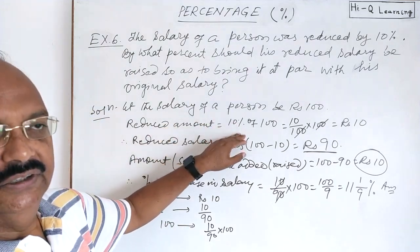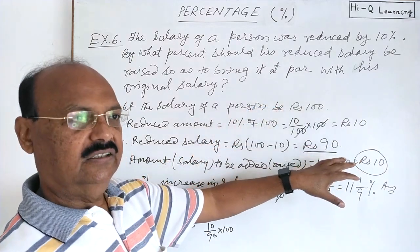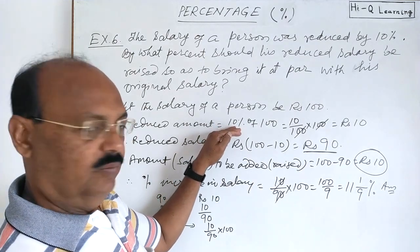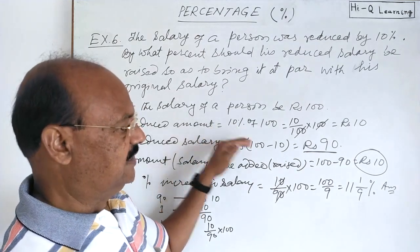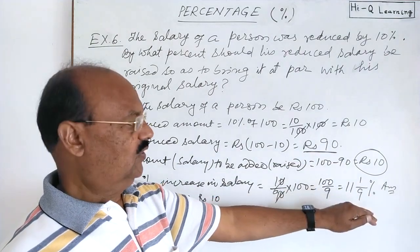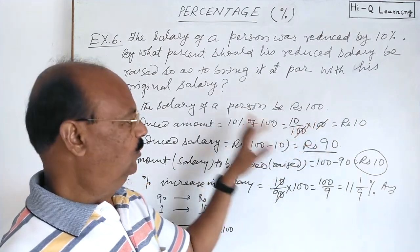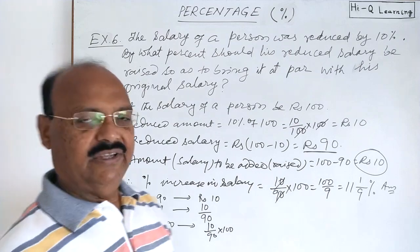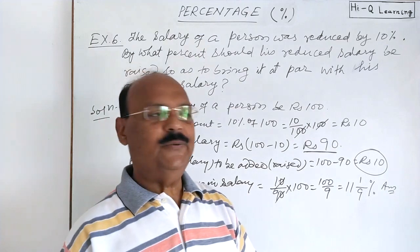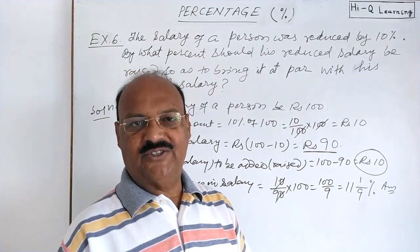This is the answer — and it is very interesting. The salary was reduced by 10 percent, but to bring that reduced amount back equal to the original salary, we should not increase it by the same 10 percent. Rather, we should increase the salary by 11 and 1 by 9 percent to bring it up to rupees 100. Hope you have understood. The question is very simple but very important, so you need some practice — after solving it two or three times you will have command over this topic.